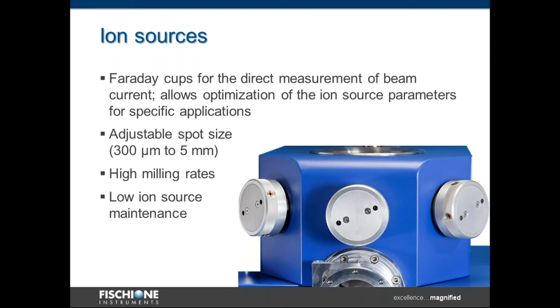Faraday cups are utilized for the direct measurement of beam current. This allows the ion source parameters to be optimized for specific applications. Additional key features include the ability to adjust the spot size anywhere from about 300 microns up to 5 millimeters. High milling rates combined with low ion source maintenance make this an ideal instrument.